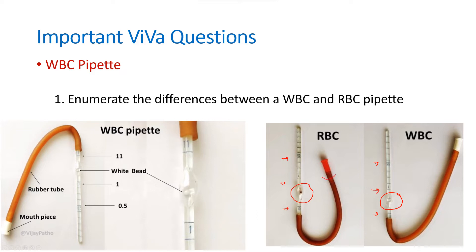The next difference is the mouthpiece. An RBC pipette has a red mouthpiece whereas a WBC pipette has a white mouthpiece. Another difference is the size of the bulb — the RBC pipette has a bigger bulb compared to the WBC pipette. These are the major differences.